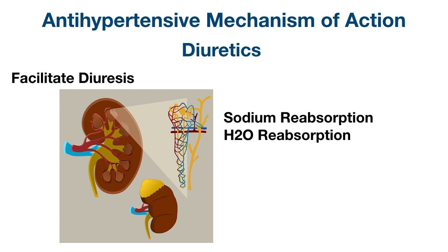One function of the nephron is to regulate sodium and water reabsorption. Water generally follows sodium, so if we reabsorb sodium we retain more water. This increases our circulating plasma volume in the blood vessels and raises blood pressure as a result.